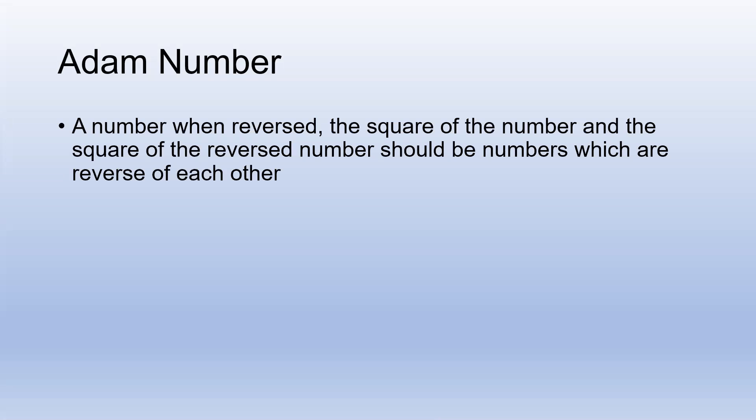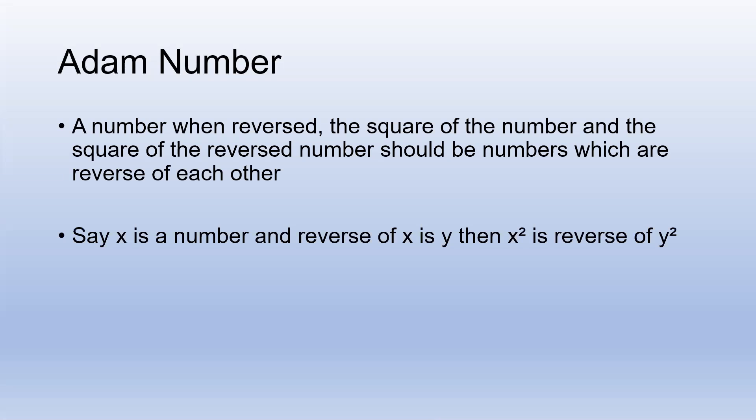First of all, let us understand what an Adam number is. A number when reversed — the square of the number and the square of the reversed number should be numbers which are reverses of each other. Say x is a number and reverse of x is y. We evaluate x squared and y squared, and verify if x squared is the reverse of y squared. If it is so, then we call x an Adam number.